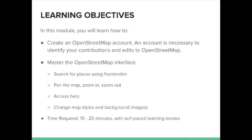In this module, you will create your OpenStreetMap account so you can start mapping. You will also learn to navigate the key functions of the OpenStreetMap interface, including searching for places, moving around the map using the pan and zoom controls, finding help, and changing the look of the map. With breaks for self-paced learning, it should take about 15 to 25 minutes to complete this module.